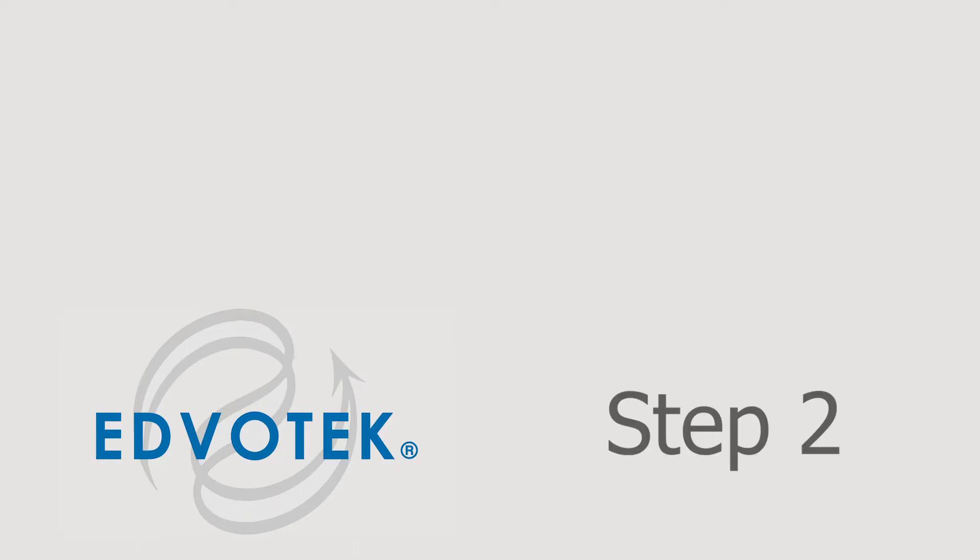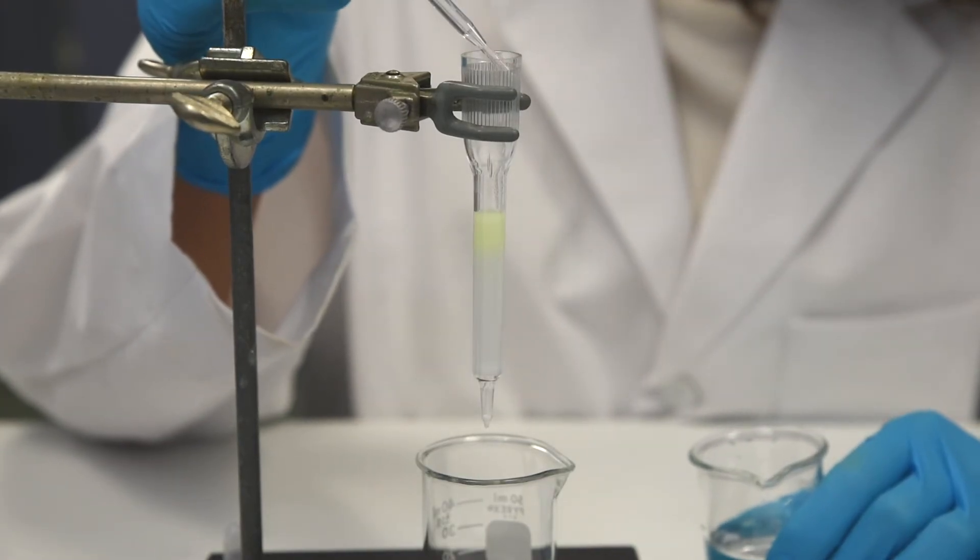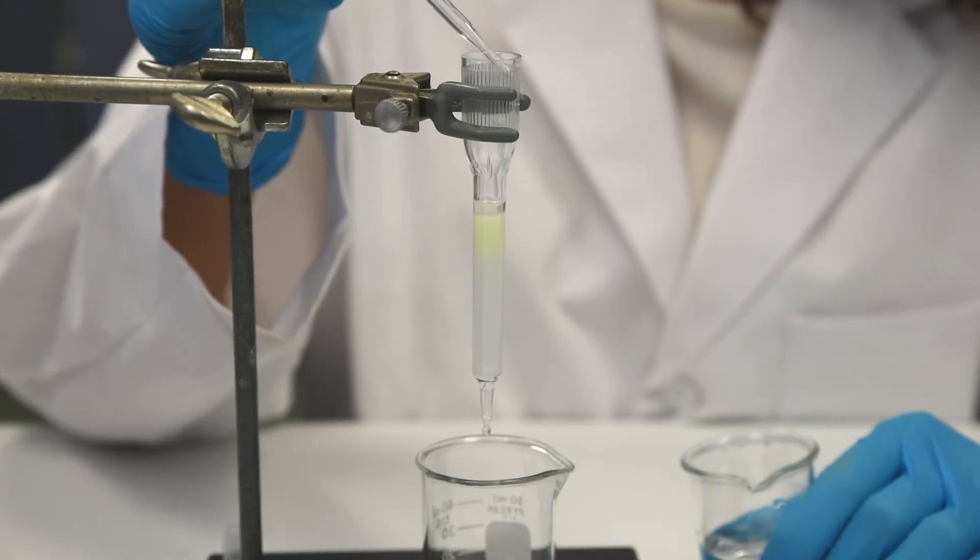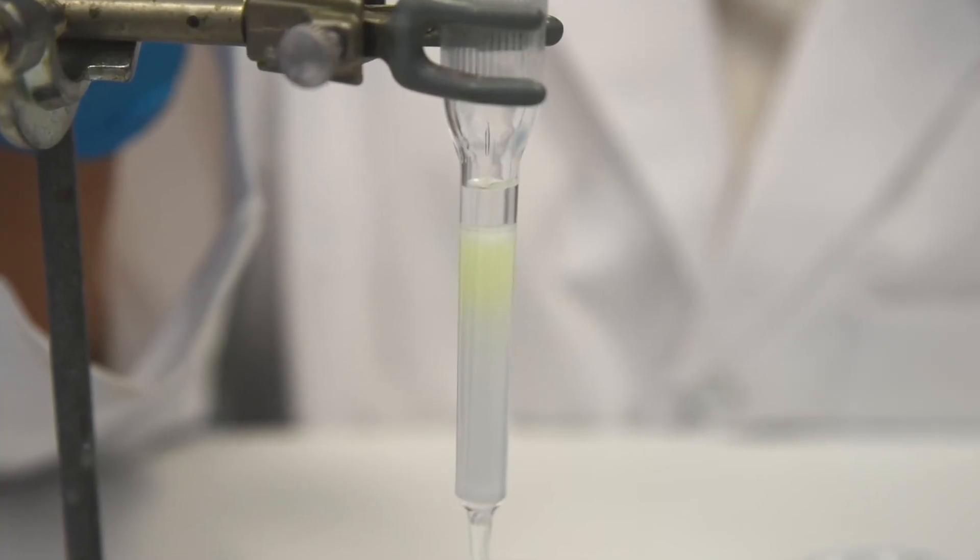Step 2: Begin to elute the column with 1x elution buffer. Add the buffer slowly, initially drop by drop, to avoid diluting the protein sample. Do not allow the column to run dry.